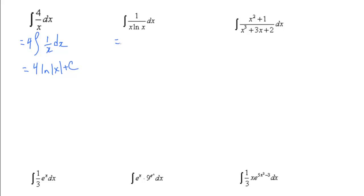In the second example, we have the integral of 1 over x ln x. 1 over x dx is the derivative of ln x, so if we recognize that, we can say that u is the natural log of x. The derivative is also in our question. The derivative of ln of x is 1 over x dx.